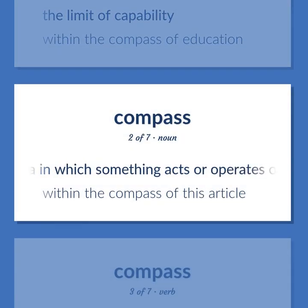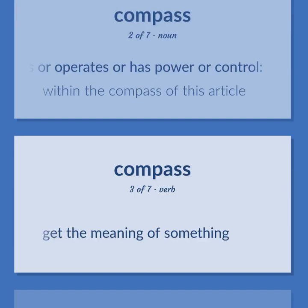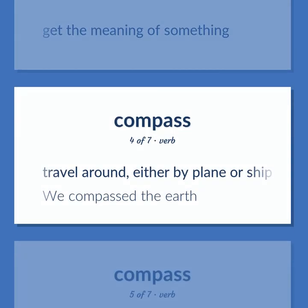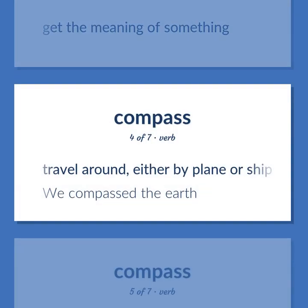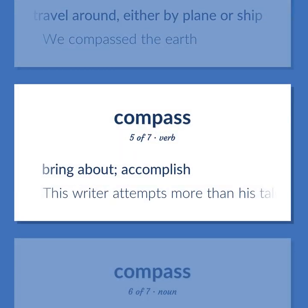Compass: An area in which something acts or operates — within the compass of this article. To get the meaning of something. To travel around, either by plane or ship — we compassed the Earth. To bring about or accomplish — this rider attempts more than his talents can compass.